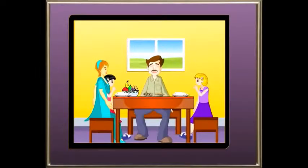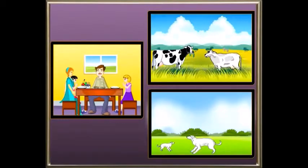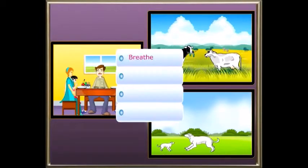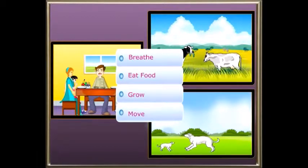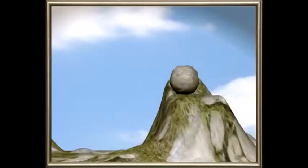Here you see a family — a man with his wife and children, and animals with their young ones. They all have some things in common: they breathe, eat food, grow, and move from place to place. These characteristics can only be seen in living organisms. Can you see this rock? It doesn't breathe, eat food, or move, therefore it is a non-living organism.